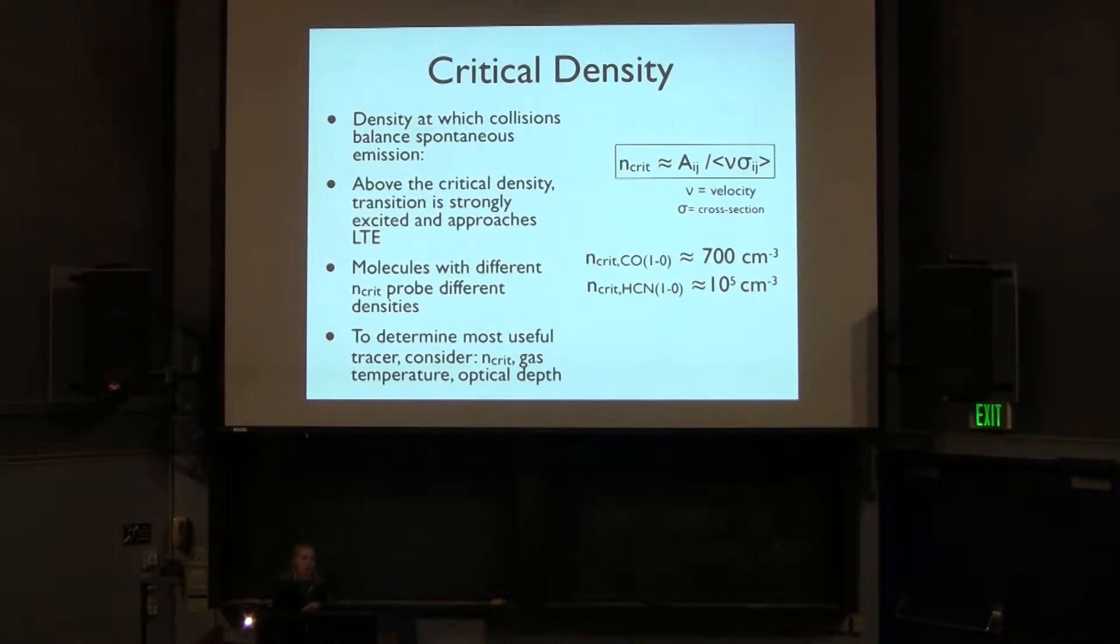So one important quantity you might want to consider for determining what molecule you want to look at is something called the critical density. This is the density at which collisions balance spontaneous emission. So it's given by Einstein A over kind of mean velocity times the collisional cross-section of the molecule. The reason this is important is if at lower densities, collisions are rare. So really, what is coming out is regulating the emission of these photons is really spontaneous emission from the Einstein A.